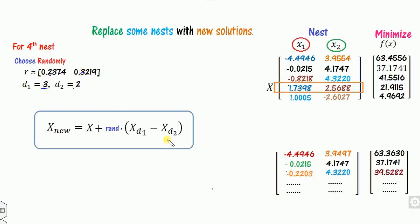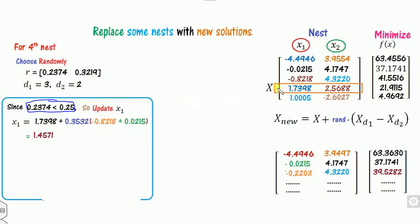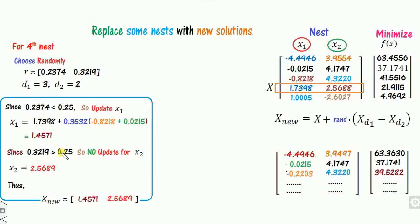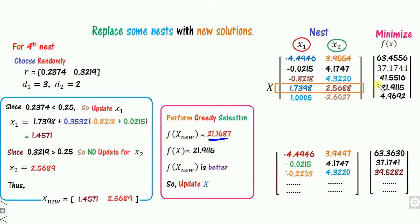For the fourth nest in phase 2, two random numbers are generated with d1 = 3 and d2 = 2. The random number for x1 is less than pa, so x1 is updated: x1_new = 1.7398 + rand * (x[3].x1 - x[2].x1). For x2, the random number is not less than pa, so x2 remains unchanged. Greedy selection confirms the new position is better than the previous value, so the solution is updated.